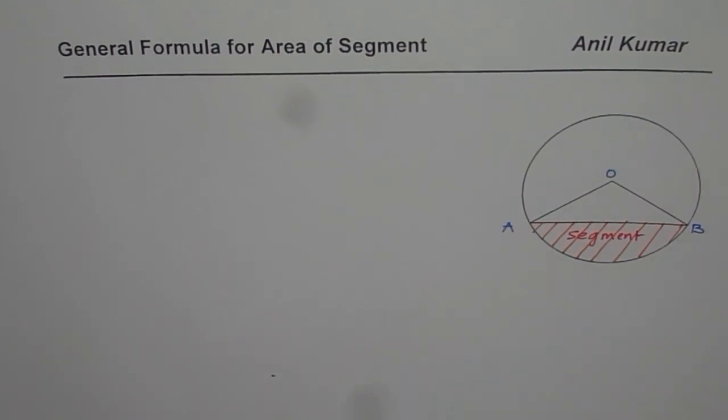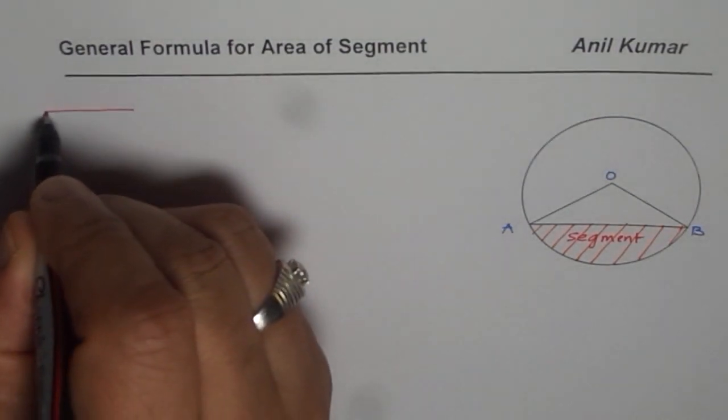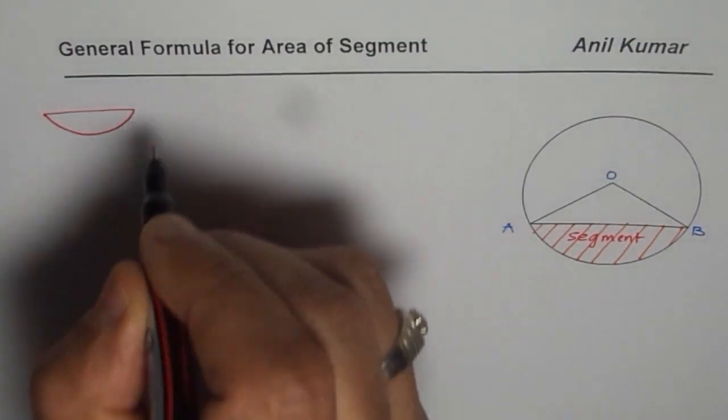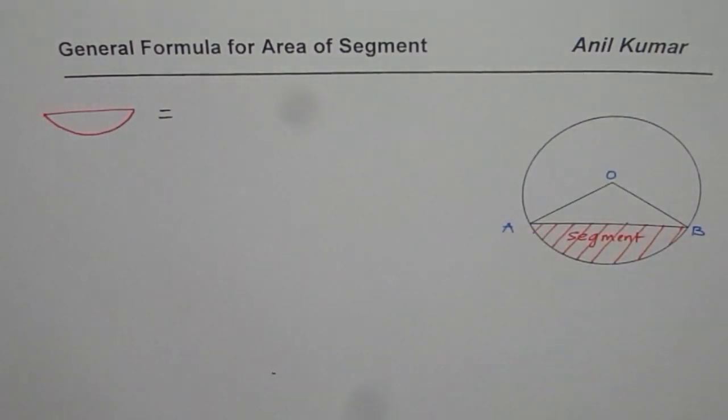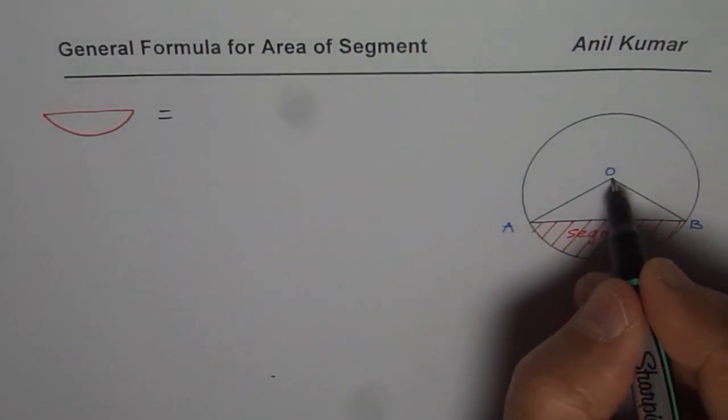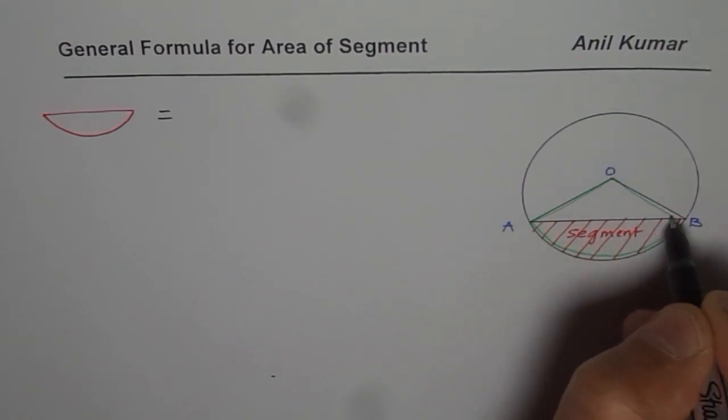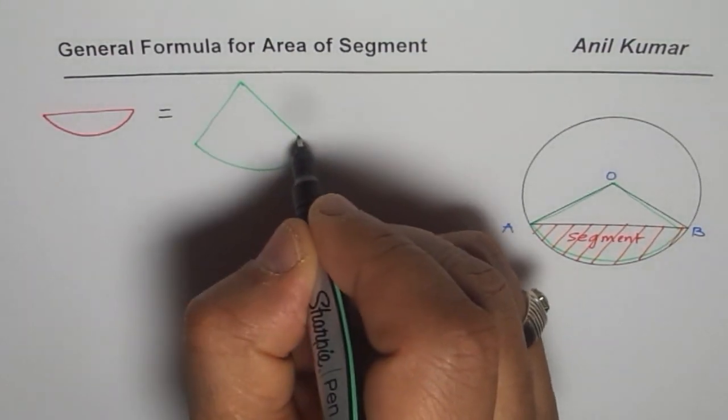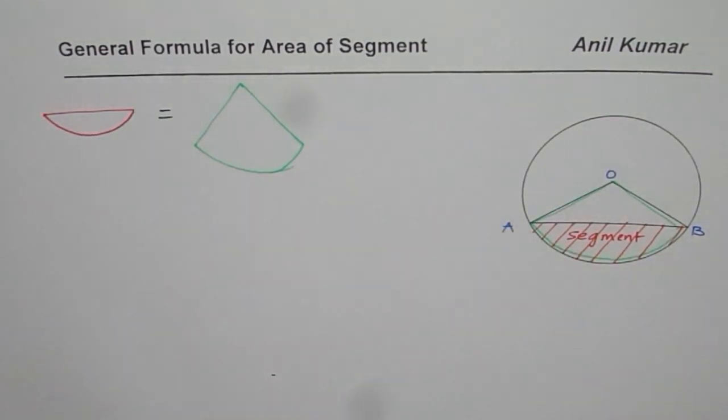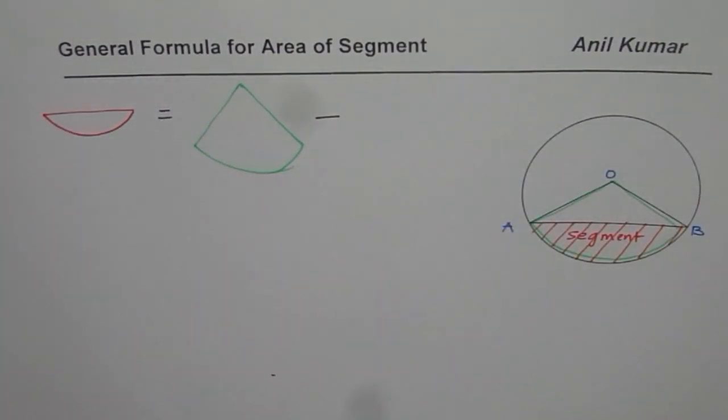So area of the segment in this particular case is equal to area of the sector which is kind of like this. Do you see this whole area? So it is the area of the sector take away area of the triangle.